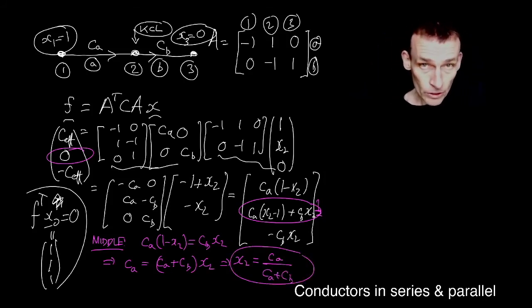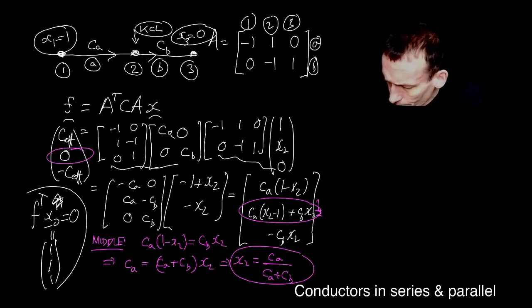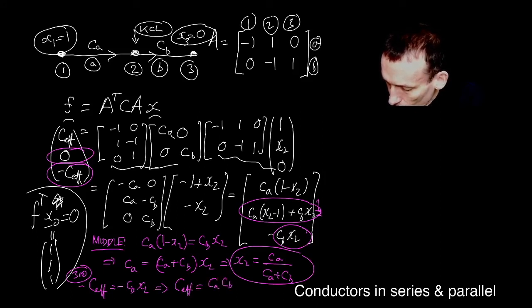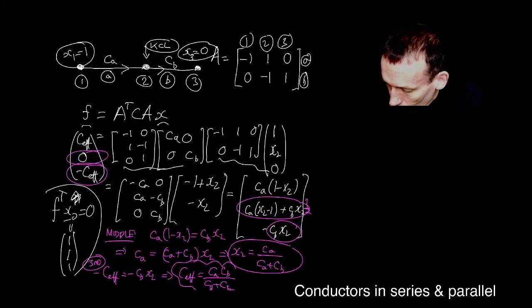And now what I need to do is to, in fact it's easier actually, look, to work out what minus CEF is. Because it's CB times X two. So minus CEF. This is the third component. Minus CEF is minus CB times X two. Which tells us then that CEF, which is the thing I'm looking for, is CA CB, the minus signs cancel, over CA plus CB.